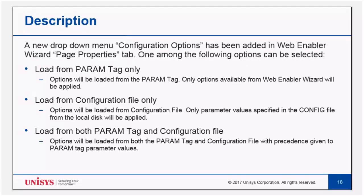A new drop-down menu, 'Configuration Options,' has been added in the WebEnabler wizard page properties tab. One of the following options can be selected: 'Load from param tag only' — options will be loaded from the param tag, and only options available from WebEnabler wizard will be applied. 'Load from configuration file only' — options will be loaded from the configuration file, and only parameter values specified in the config file from the local disk will be applied. 'Load from both param tag and configuration file' — options will be loaded from both, with precedence given to param tag parameter values.